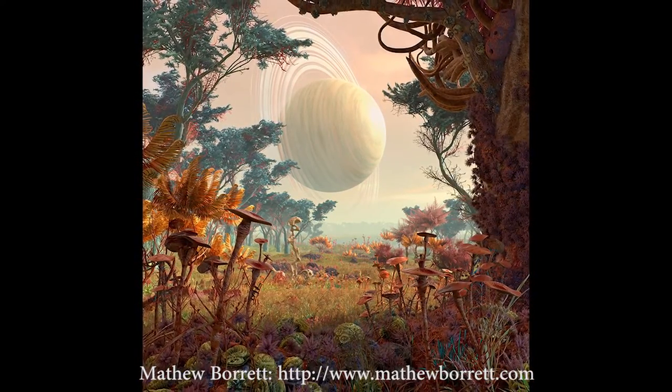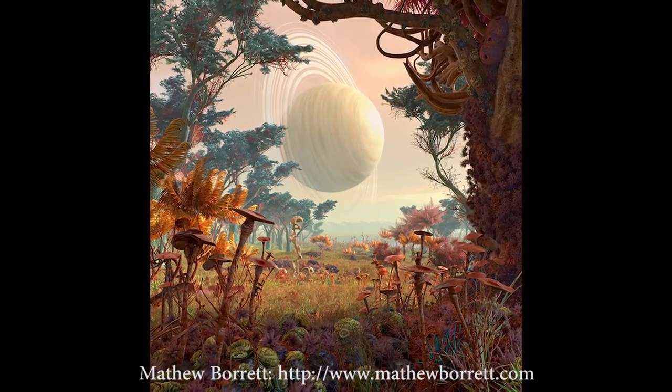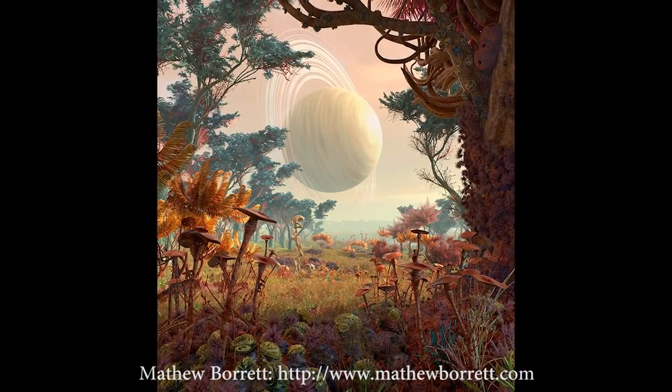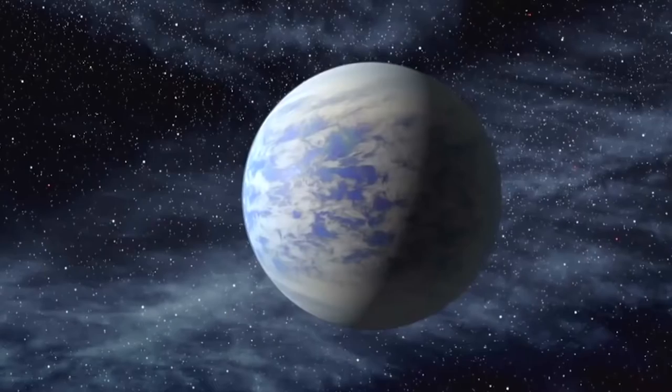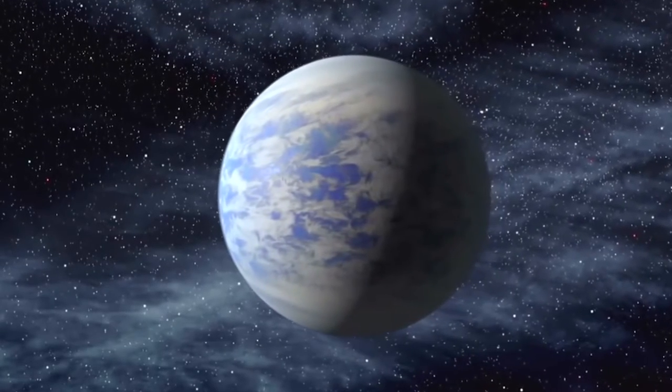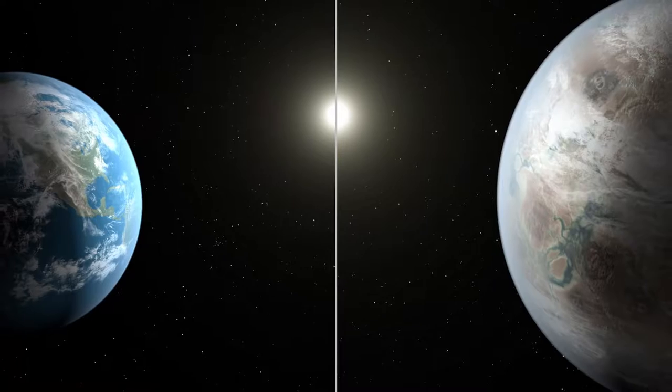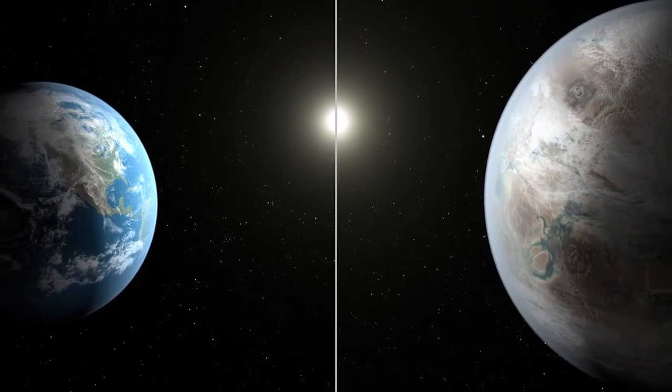Super habitable planets are planets that would support higher biodiversity and favor the emergence of life more than Earth. First proposed by Renee Heller and John Armstrong in 2014, the idea behind the concept is to understand that Earth may not be the planet most suited for life.